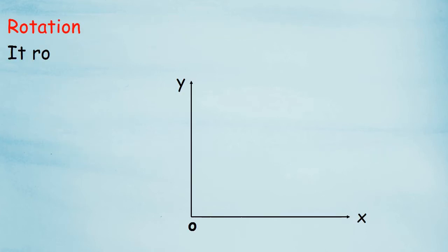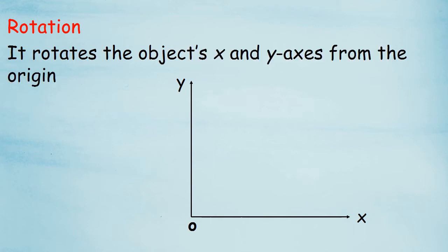Rotation is nothing but the object's X and Y axis all rotates from the object. Just look at the image where O is the origin, X and Y are the coordinates. Here one square box is there. Once we apply the rotation, it got rotated. It looks like a diamond.